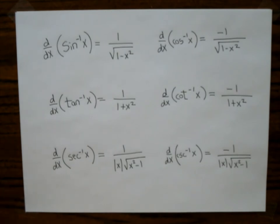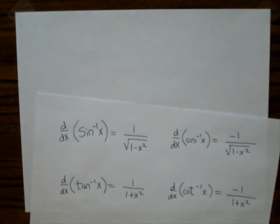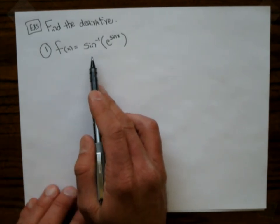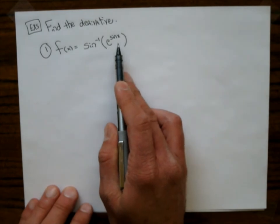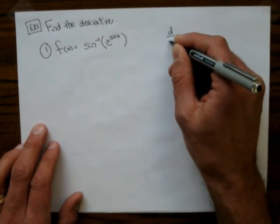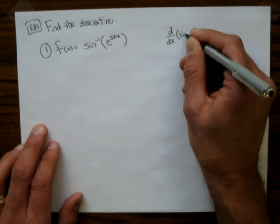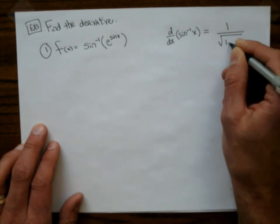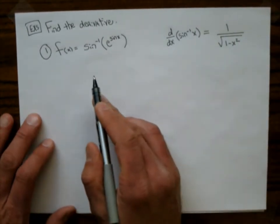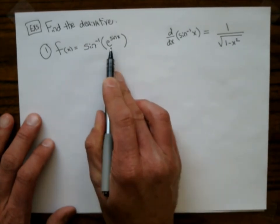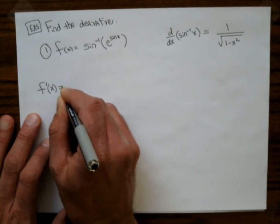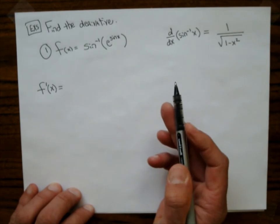Section 3.10 is not a long section. Let's do our first problem that looks like the homework problems. Find the derivative of a function which equals sine inverse of e raised to the sine x. I'm going to put up the derivative formula: the derivative of sine inverse x is 1 over square root of 1 minus x squared. If you want to take a shot at this before I do the example, you can pause the video.